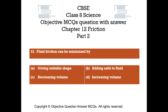Question number 12: Fluid friction can be minimized by? Option A: Giving suitable shape. Option B: Adding salts to fluid. Option C: Decreasing volume. Option D: Increasing volume.